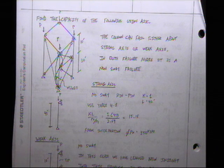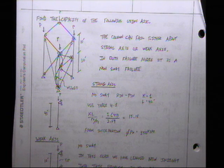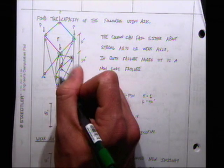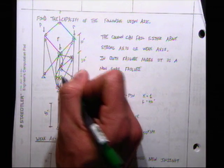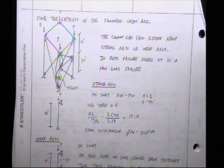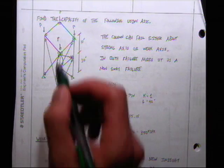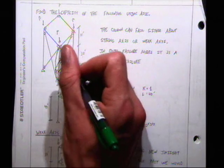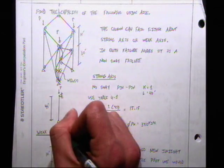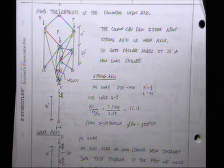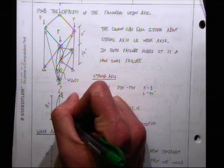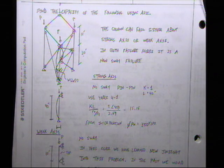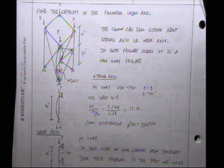For buckling about the strong axis — the long one — it's a no-sway pin-pin condition: pin at the top, pin at the bottom, and it's 40 feet (10 plus 30). If we take that column out and orient it, buckling would occur like this. It's pin-pin, K equals 1, L equals 40 feet. I can use Table 4-1 or other tables.